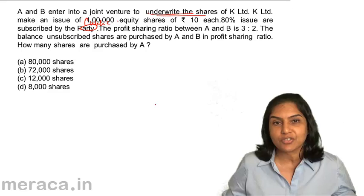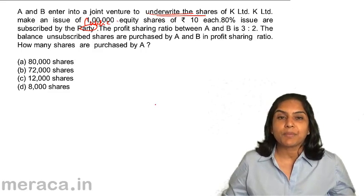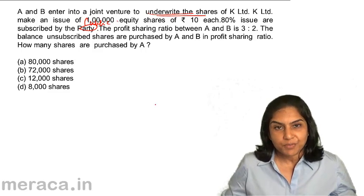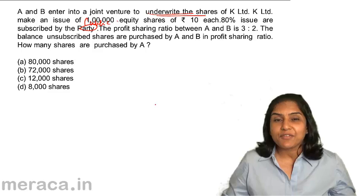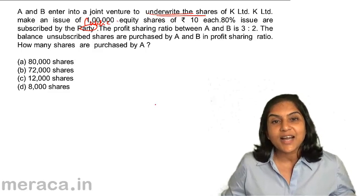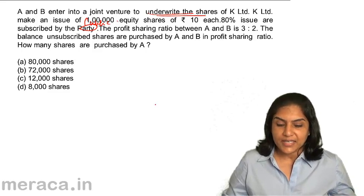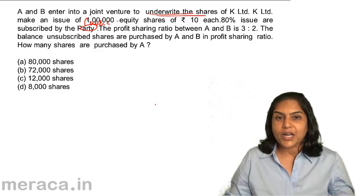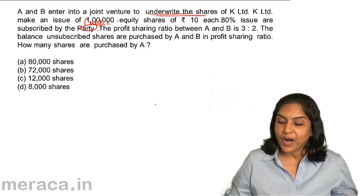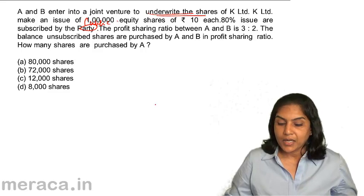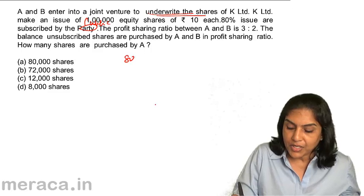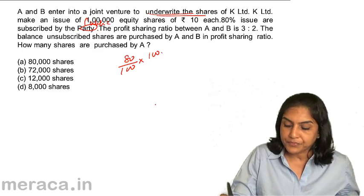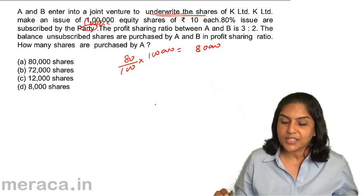If the company makes an issue of 10 lakh shares of ₹10 each, it will be assured that the entire issue will be subscribed for, because even if the public does not subscribe for the same, the underwriter will. For this, the underwriter is usually given a certain commission on the amount that he has underwritten. So, having said this, let us work out this problem. A and B enter into a joint venture to underwrite the shares of K Limited, which has made an issue of 1 lakh equity shares of ₹10 each. 80% of the issue is subscribed for by the public — that is, 80,000 shares.